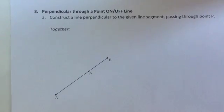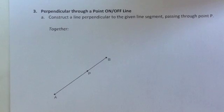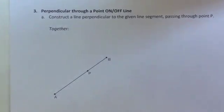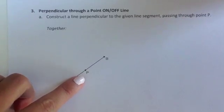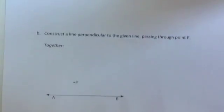Construction 3 is perpendicular through a point on or off the line. We're going to see two different examples here, one where the point P is on the line, and one where point P is off of the line.